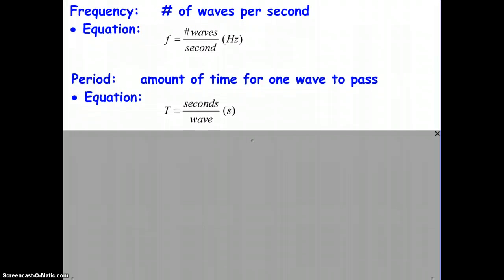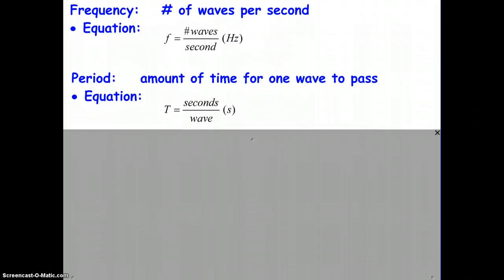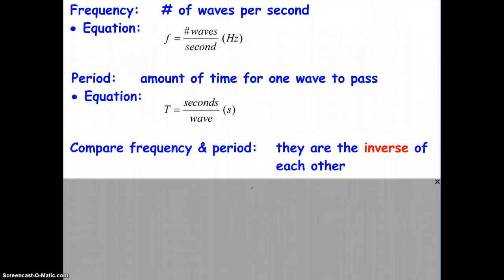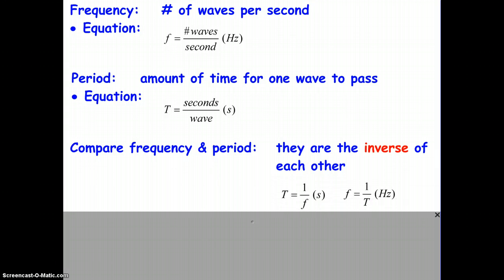Well, as you examine those two equations, how do you think they compare? Comparing frequency and period, we see that they are the inverse of each other. And because of that, we can express them in equation form to be the inverse of each other. So, capital T equals 1 over f, units in seconds. f is 1 over capital T, units are hertz.